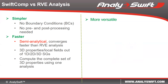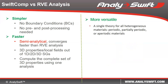SWIFT-CON is more versatile because it's a single theory for all heterogeneous materials. It could be periodic, partially periodic, or non-periodic materials. The structure genome can have arbitrary shapes, unlike RVE analysis which must be rectangular or cubic.